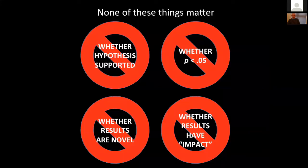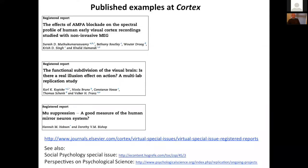It's important to emphasise the criteria that are not used to select papers at stage two. None of these things matter: whether the hypothesis was supported, whether the results are statistically significant, whether the results are novel, and subjective judgments about impact — these are completely ignored as part of the review process, in contrast to standard publishing.